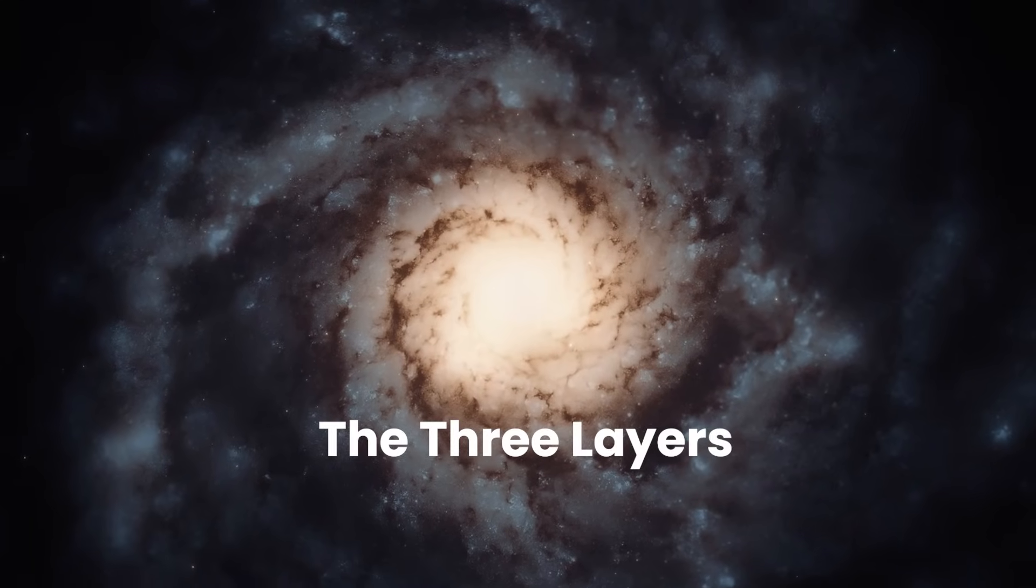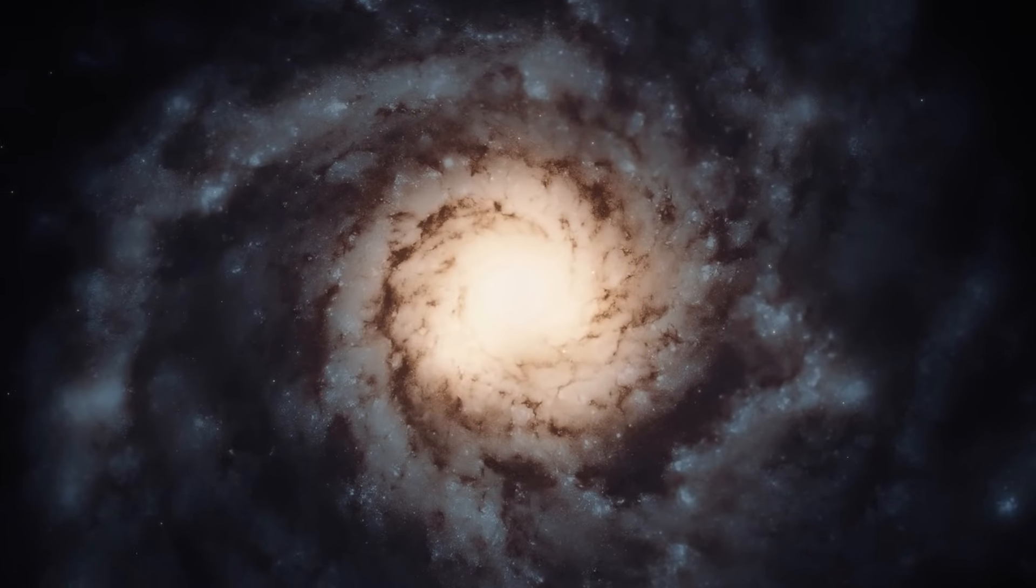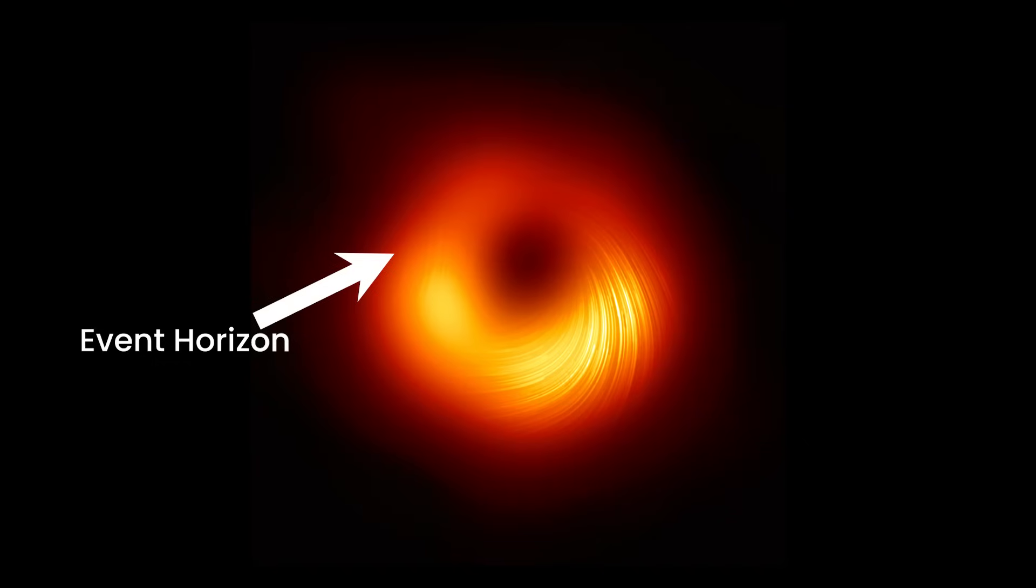The three layers. To reach the core of a black hole, one must traverse through its intricate layers. The first layer, known as the event horizon, marks the point of no return. Once past this threshold, escape becomes impossible and the relentless pull of the black hole takes hold.